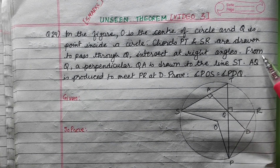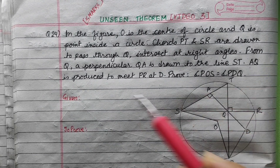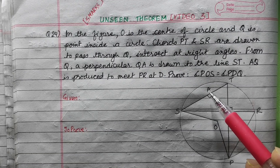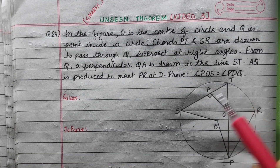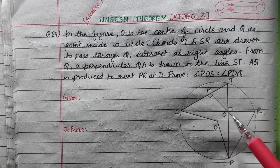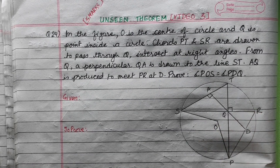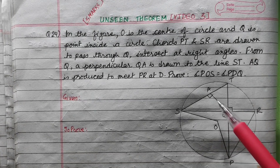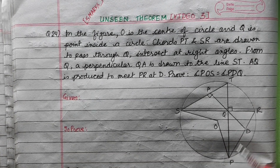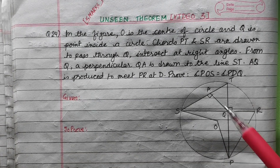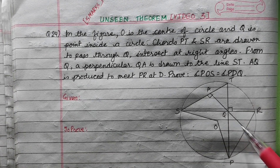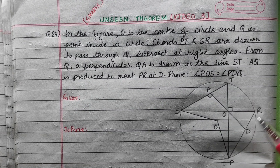From Q, QA is drawn perpendicular to ST. AQ is produced to meet PR at D.